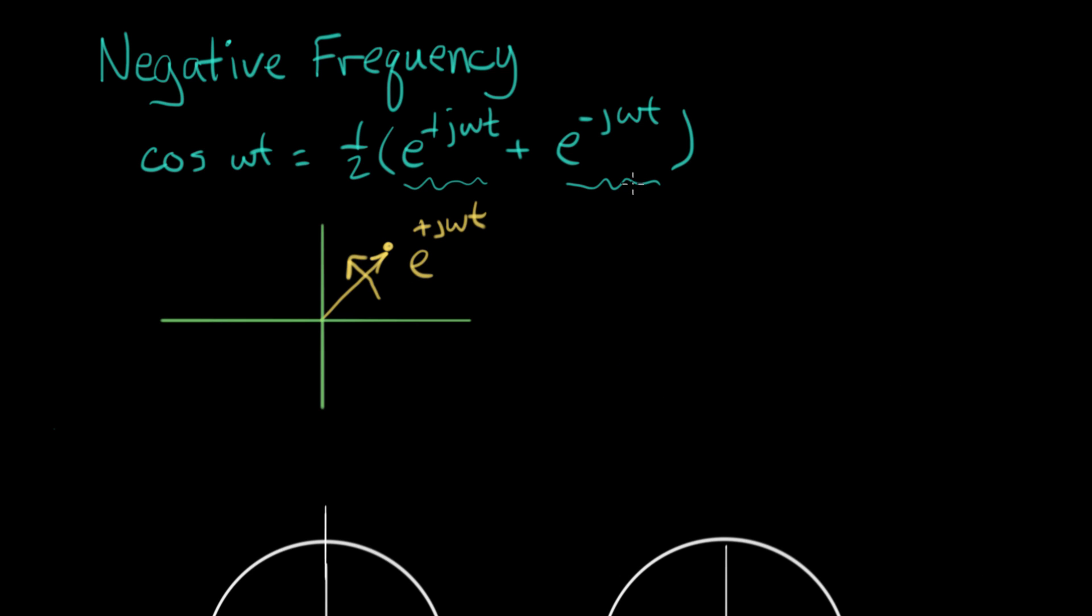Now the other term over here would look similar. It would be some vector in space, e to the minus jωt. This one is rotating in the negative direction, so that means it's rotating this way.